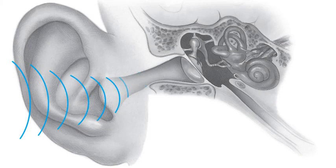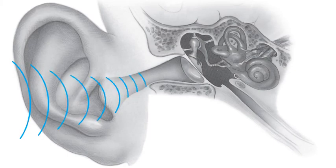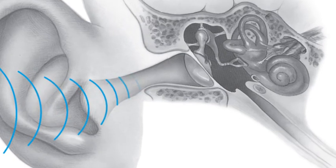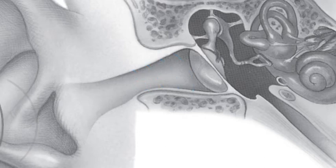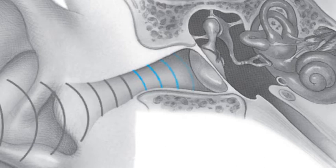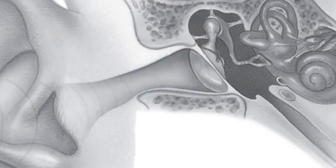Sound is collected from our environment by the pinna and channeled down the external ear canal toward the eardrum. As the sound waves hit the eardrum, they cause it to vibrate, changing the acoustical energy of the sound wave into mechanical energy.